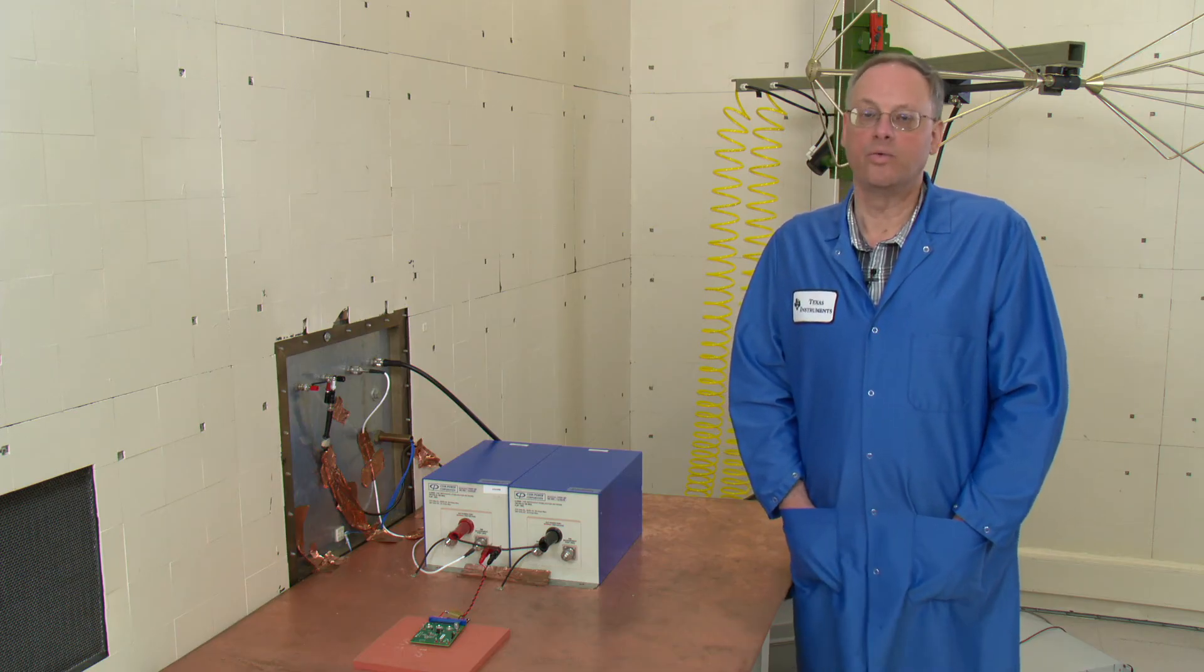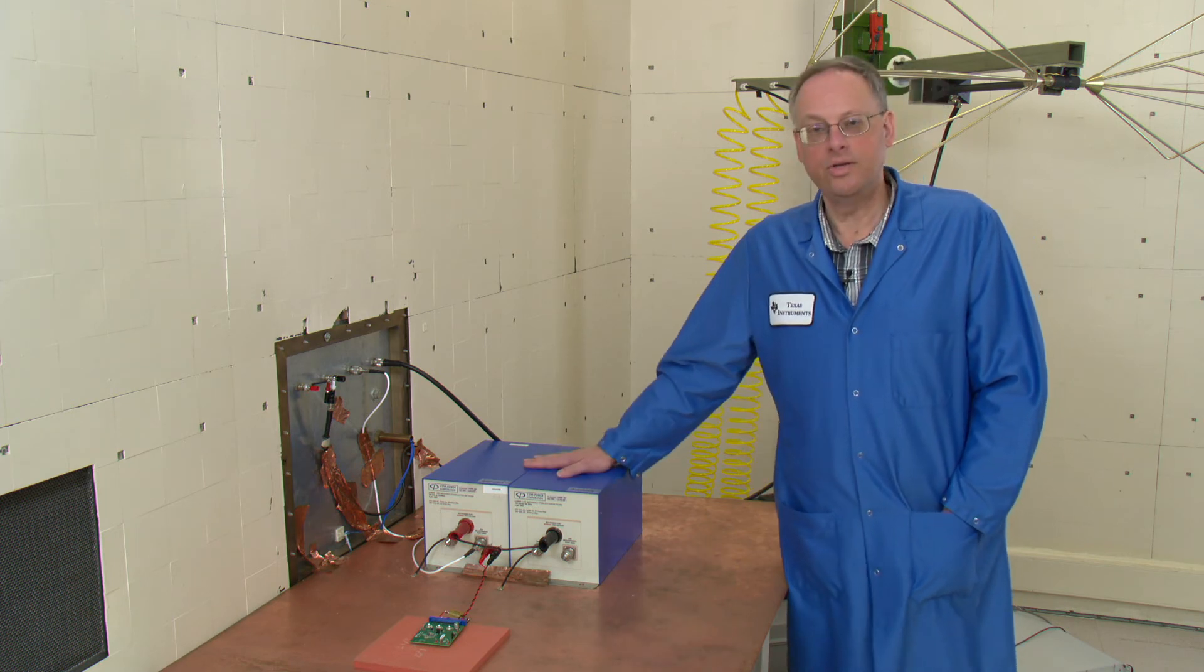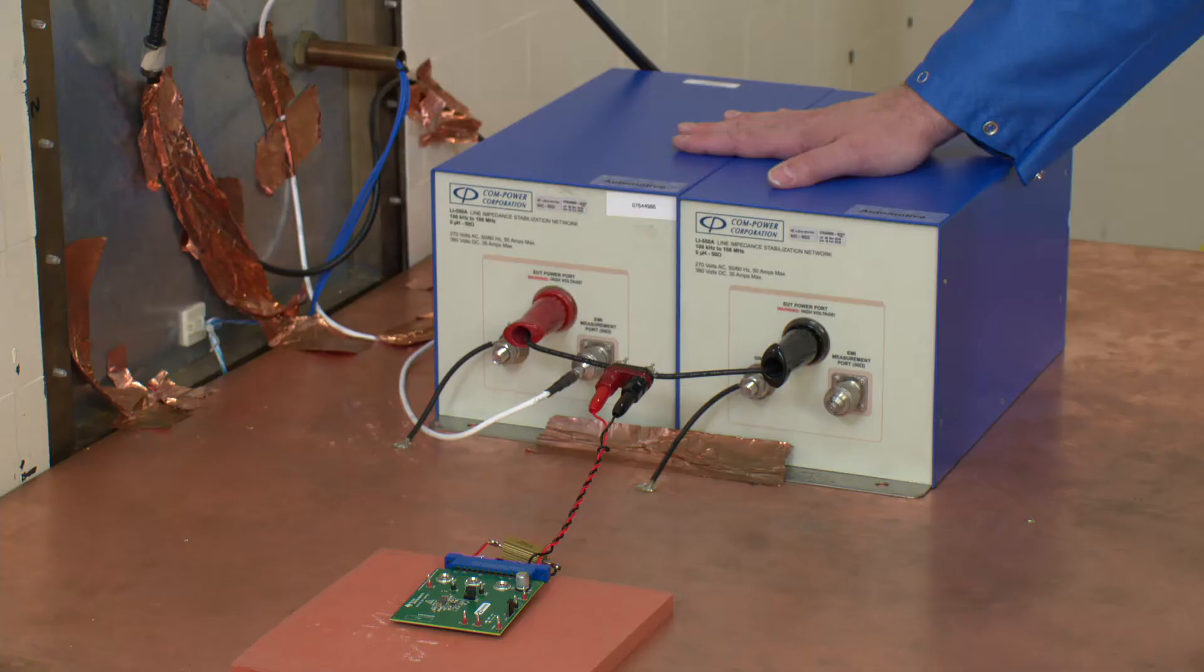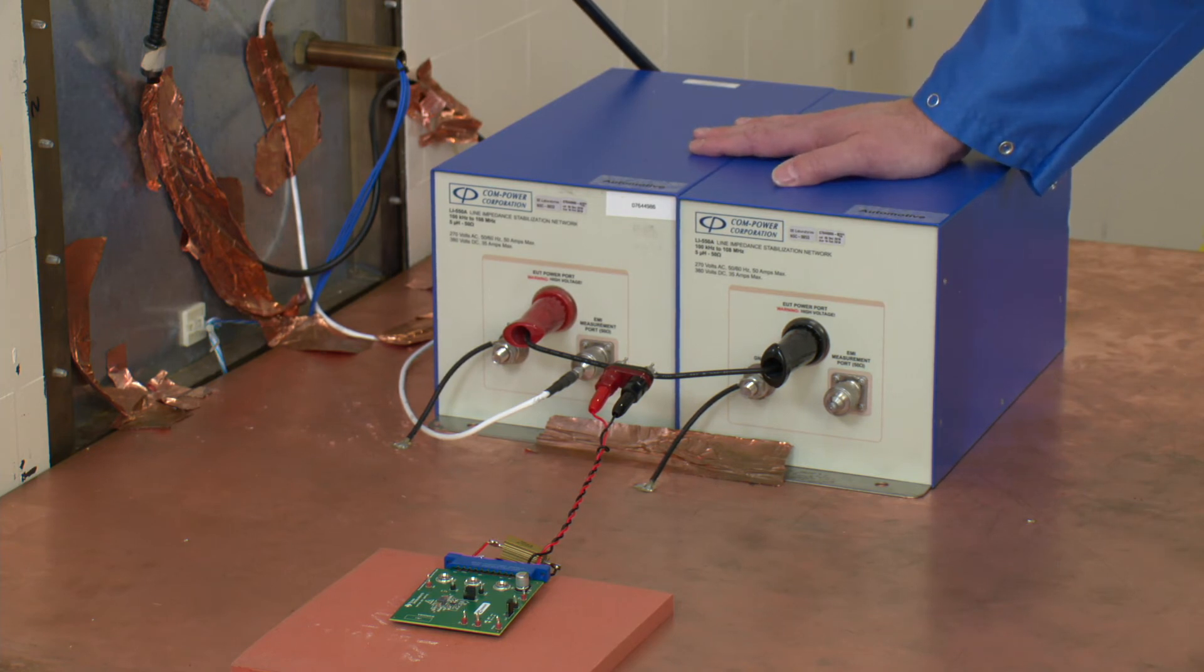So why don't we go into the chamber and take a look at the rest of the setup. Here we are in the EMI chamber with the rest of our setup. These two units comprise the LISN. The LISN separates out the noise from the DUT and sends it to the EMI receiver and bypasses the noise from the input supply. We have one in the negative input lead and one in the positive input lead.